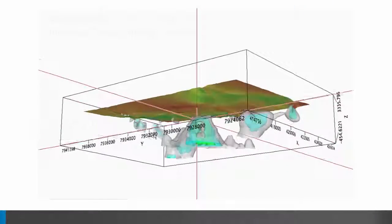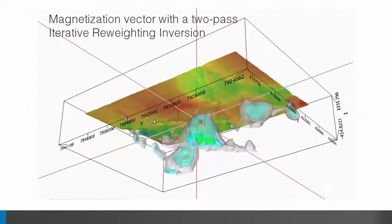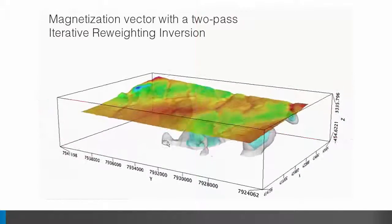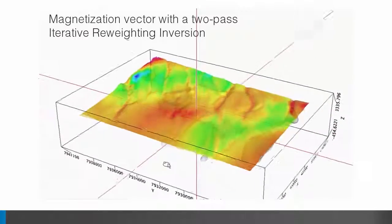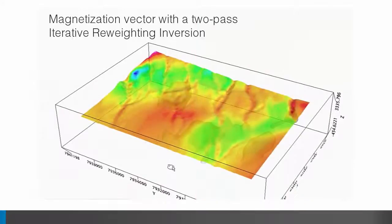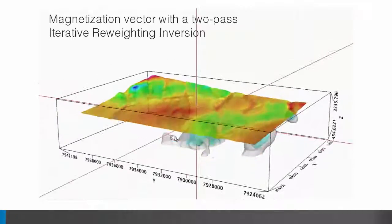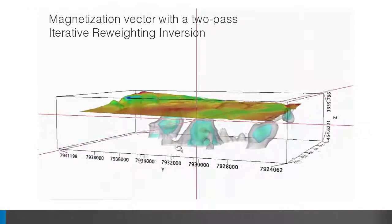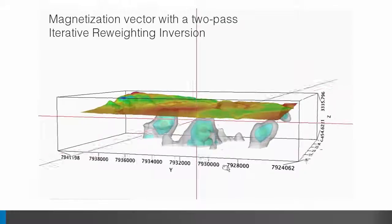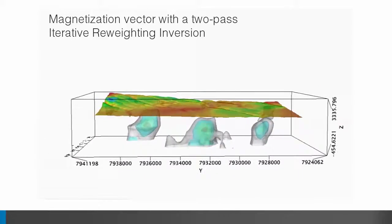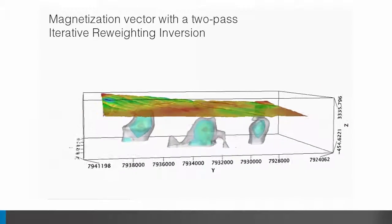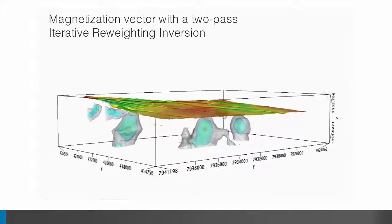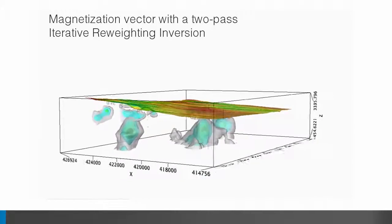That residual dataset was then submitted to VOXI to calculate the distribution of magnetization. Without this regional residual separation, the inversion results were dominated by high-frequency noise that masked the putative shape of the magnetic porphyry copper and made interpretation difficult. Using the topography and a simple geological constraint to model and remove the unwanted signal enabled VOXI to recover a meaningful distribution of magnetization, which is shown here.